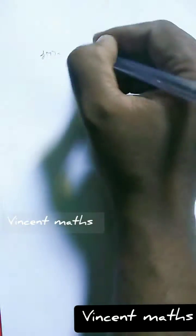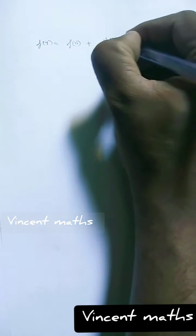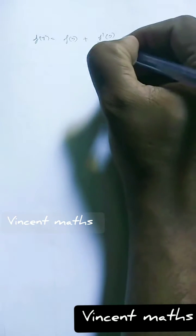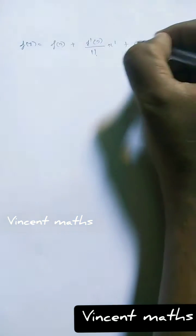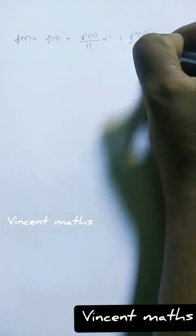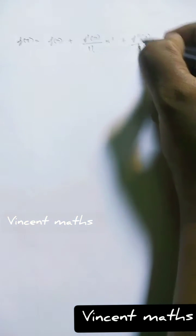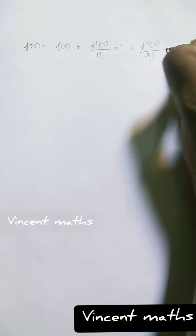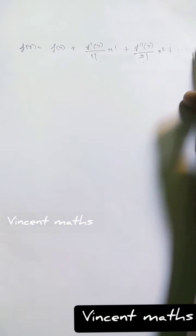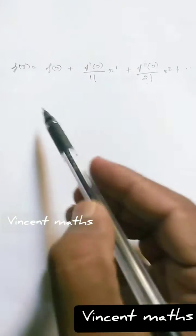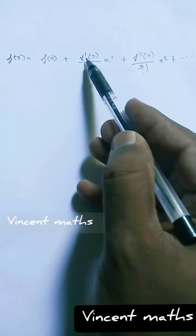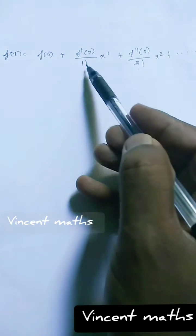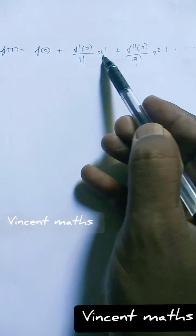The Maclaurin series formula is: f(x) = f(0) + f'(0)/1! · x¹ + f''(0)/2! · x² + ... This formula is simple. If you want to apply it, take f(0), then f'(0)/1! · x¹, then f''(0)/2! · x², and so on.